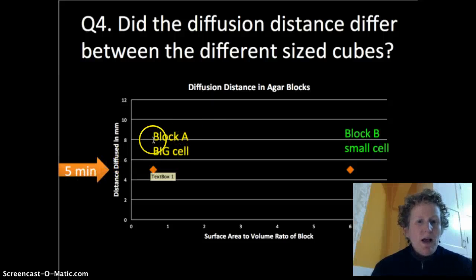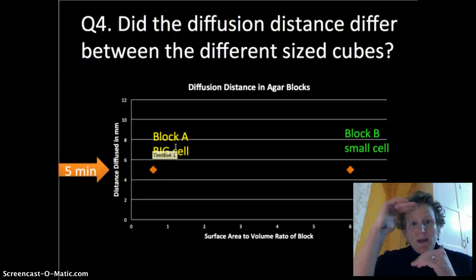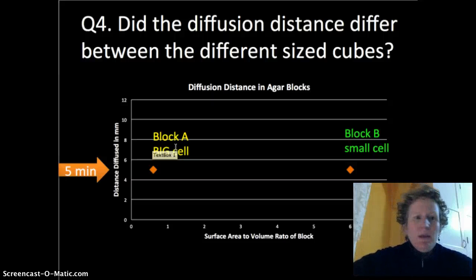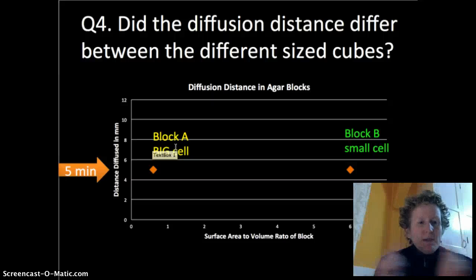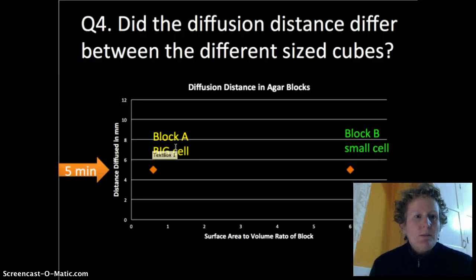So here's block A, the really big cell, and here's block B, a really little cell. The distance the vinegar diffused is going to be the same because the cell size doesn't control how fast the vinegar diffuses.